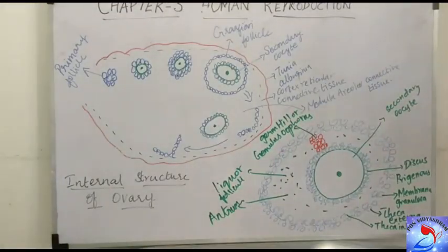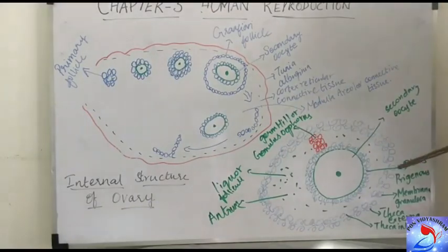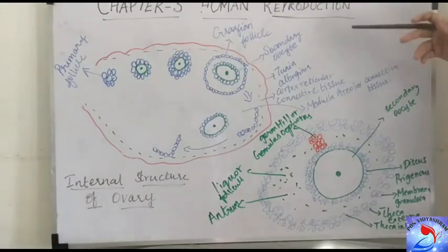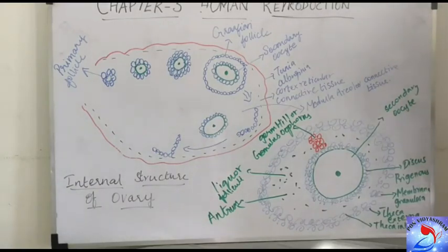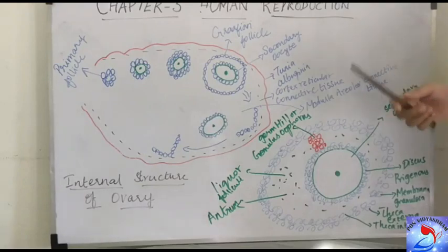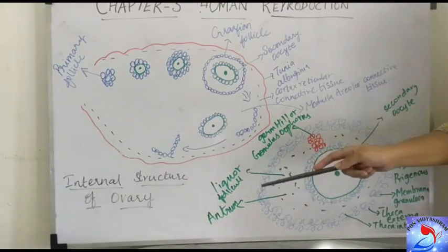Before looking at the internal structure of the ovary, it is important to note that the ampulla of the fallopian tube, where the egg is released, is the site of fertilization. The zygote formed by fertilization then moves to the uterine wall where it gets implanted. So the site of implantation is the uterus, whereas the site of fertilization is the ampulla.